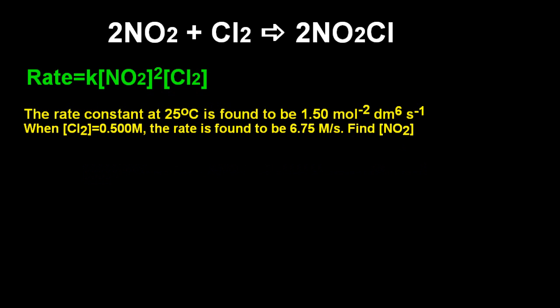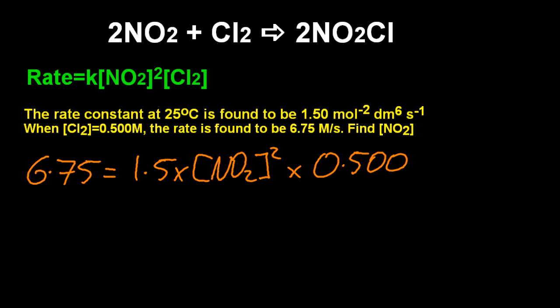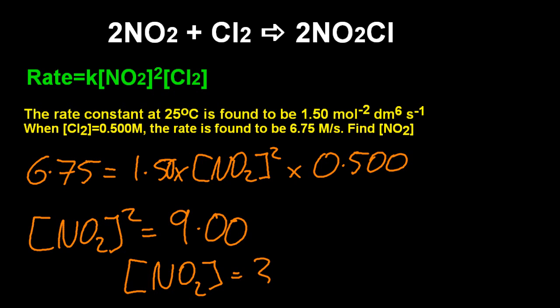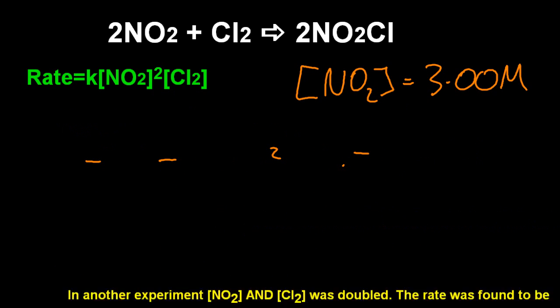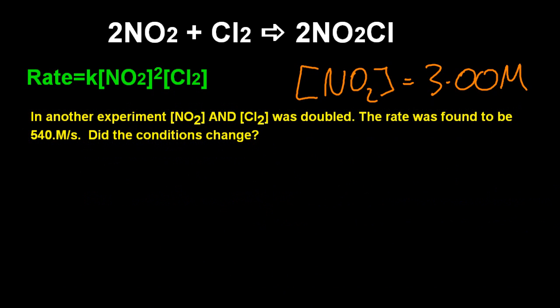All right then, so this is a trickier one. So let's find the concentration of NO2. Just put the numbers in. And so that gives me the concentration of NO2 squared is 9. Okay, that wasn't so tricky. Ah well, this was part 1. Look at part 2. So the concentration of nitrogen dioxide is 3 molar. Concentrations are in molar or moles per decimetre cubed. Let's just keep that number up there for the next question.